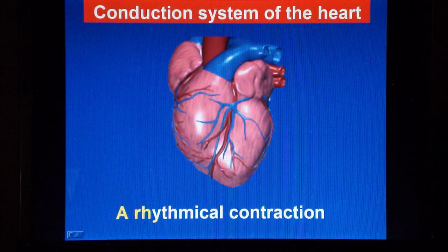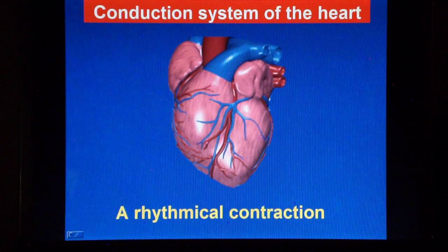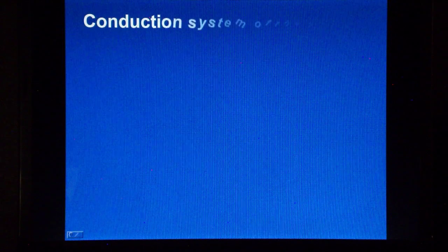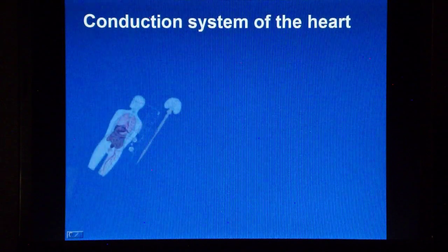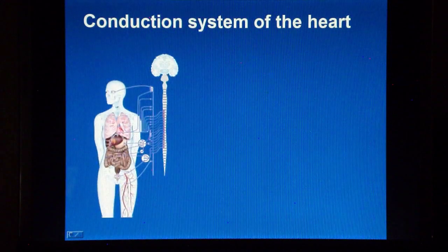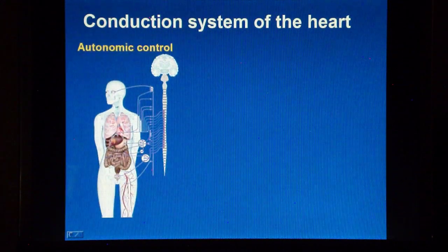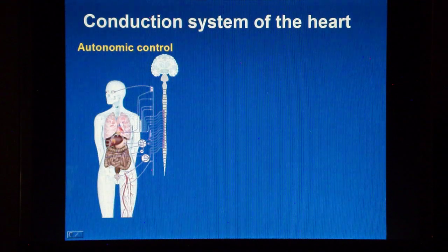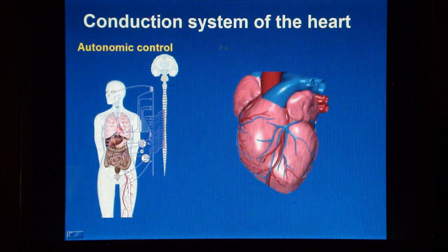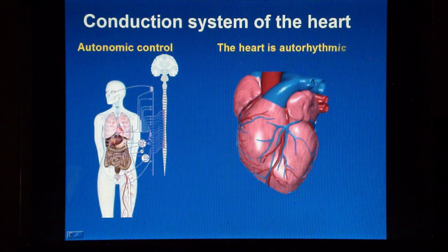At rest, the heart beats about 70 times a minute and pumps about 5 liters of blood around the body. The heart is under the control of the autonomic nervous system, which regulates the cardiac activity to meet the body's physiological demand. Nonetheless, the heart cells have the potential for spontaneous electrical activity and contract rhythmically.